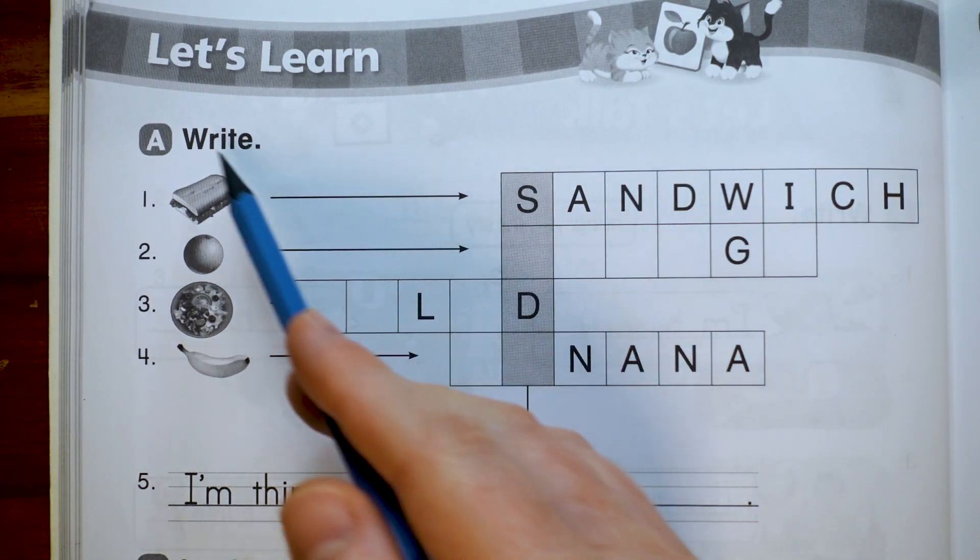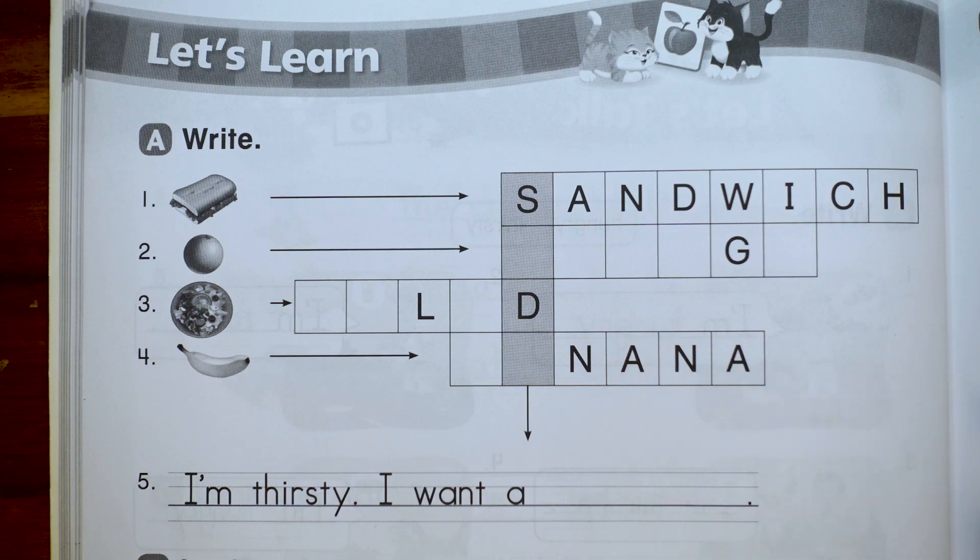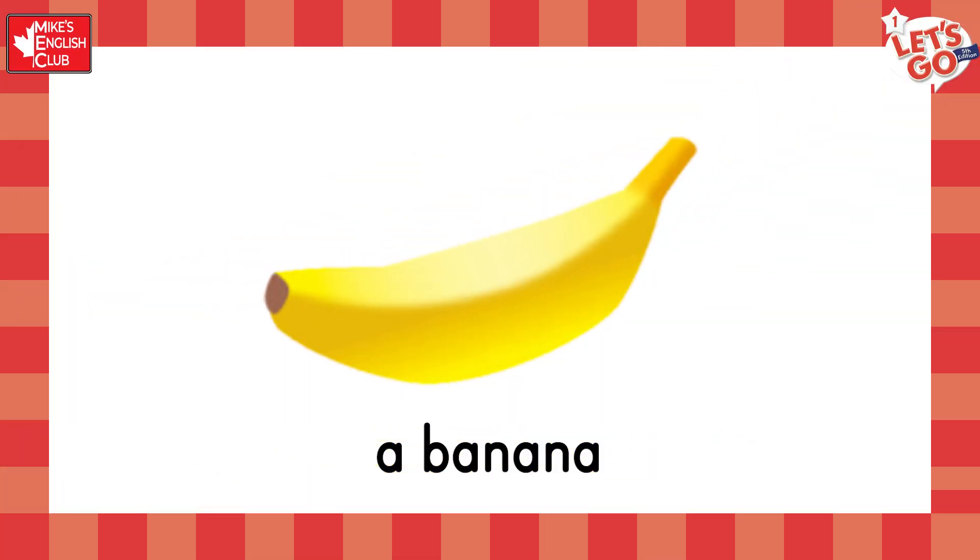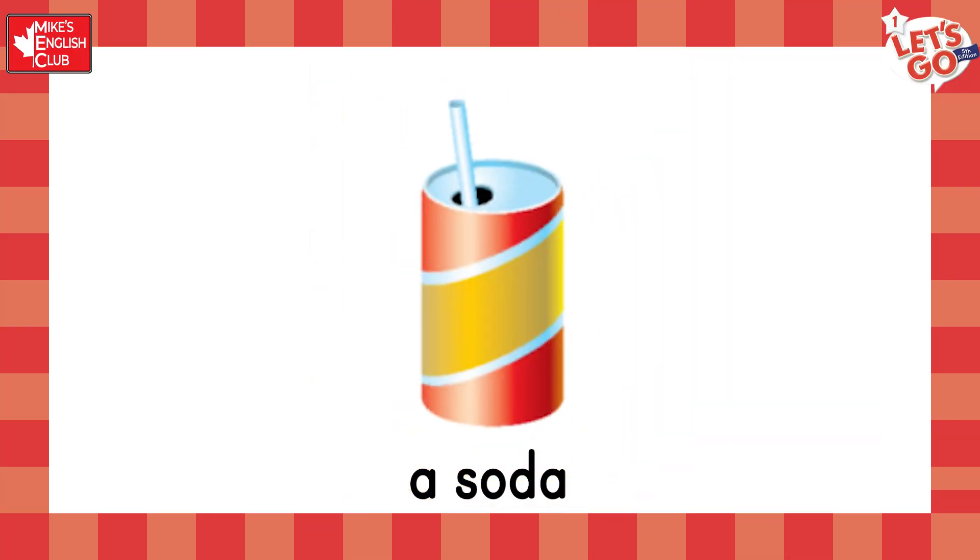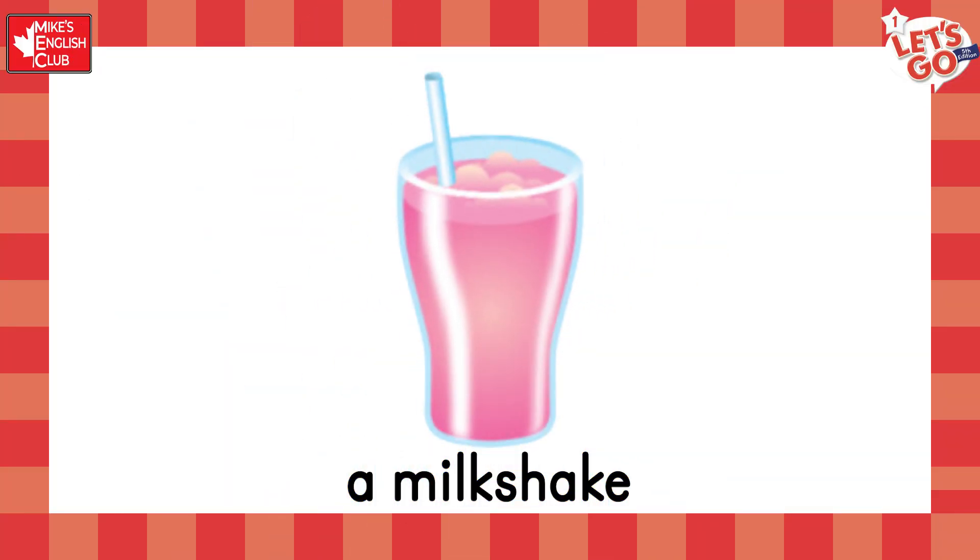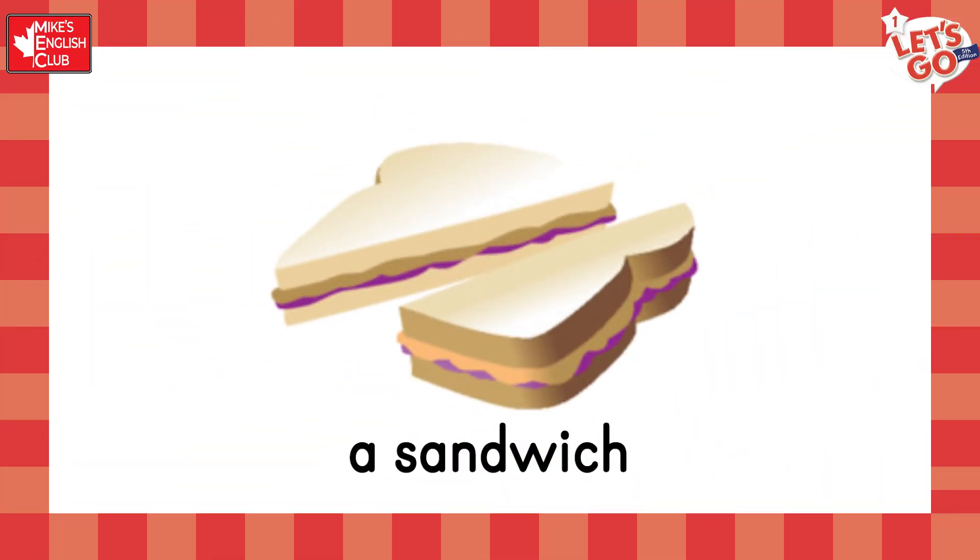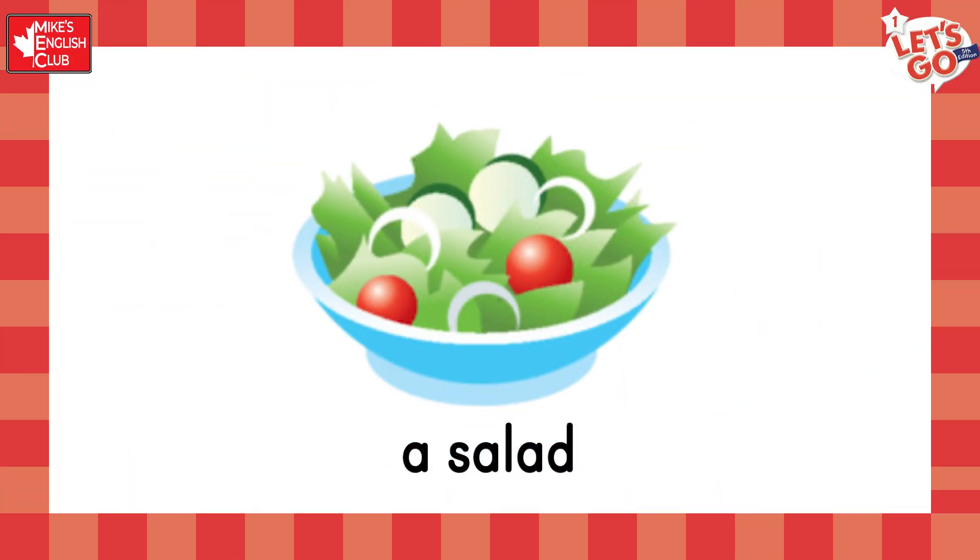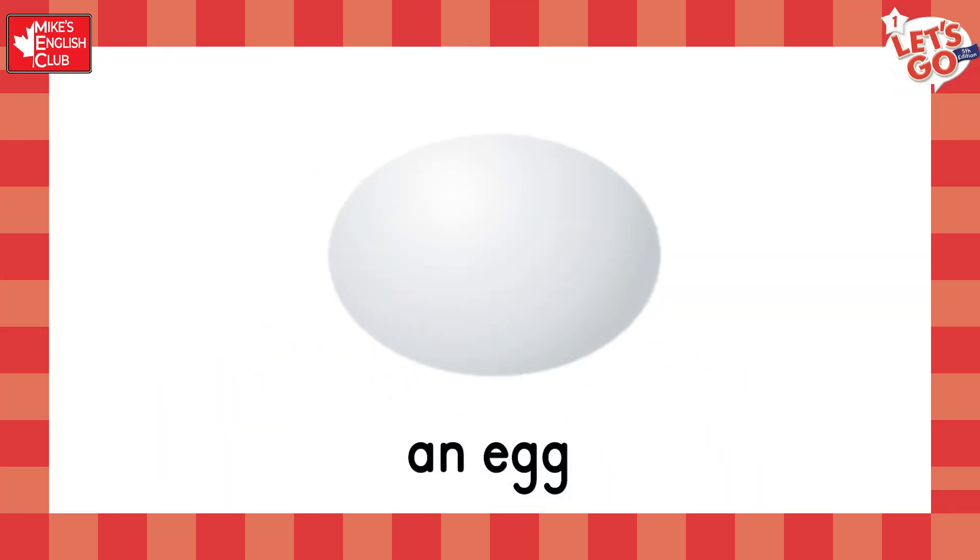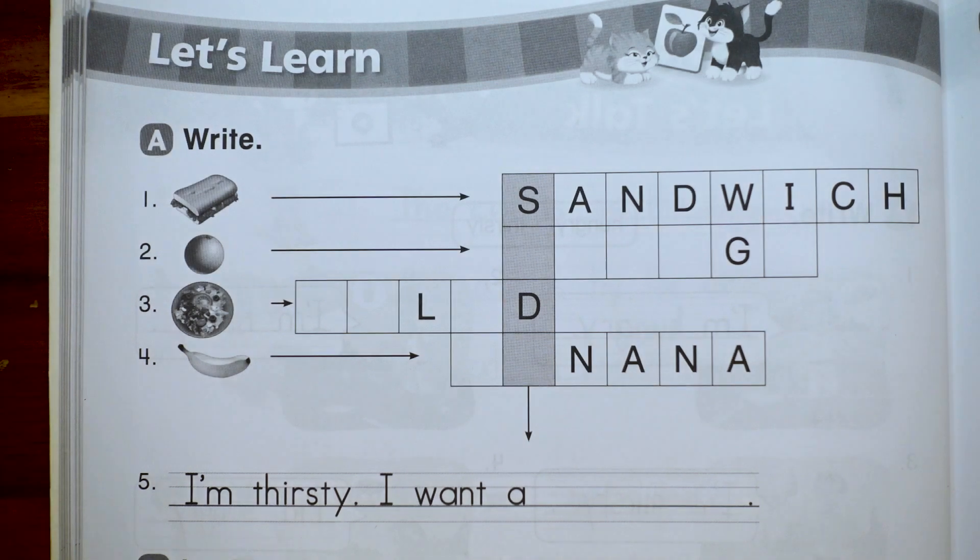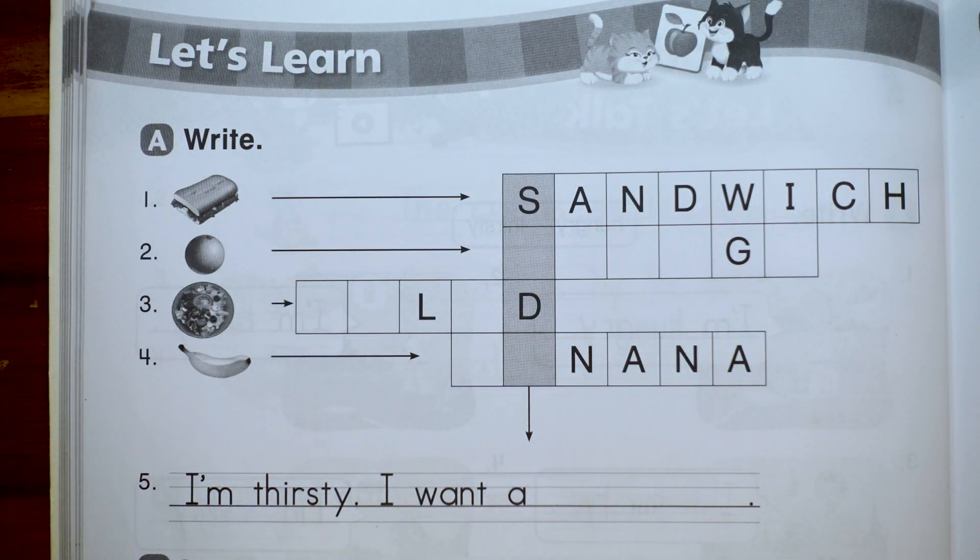First, we have some vocabulary words here, and in the student book they looked like this: a banana, a soda, a milkshake, a cookie, a sandwich, a salad, an egg, an orange. Okay, let's put them into the right spots.